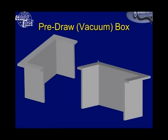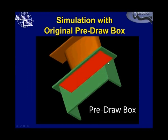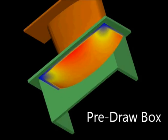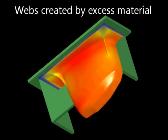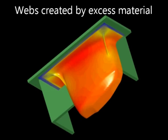This deep draw part was done using what they call a pre-draw or vacuum box. The material is first drawn into this box and then the forming is reversed onto the mold. In this animation you can see the material getting drawn into the pre-draw box, the tool comes into position, the vacuum is reversed, and the material forms onto the tool.